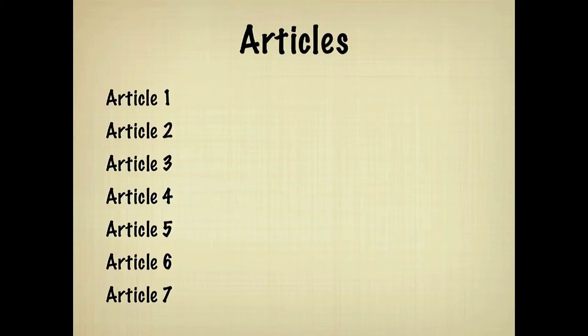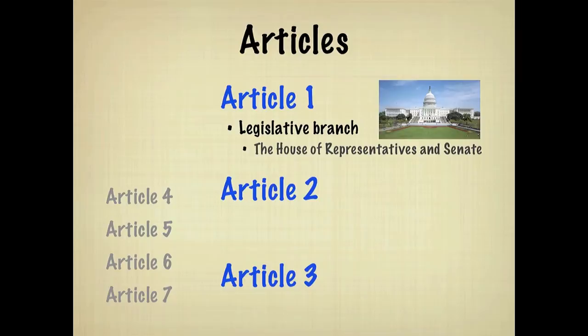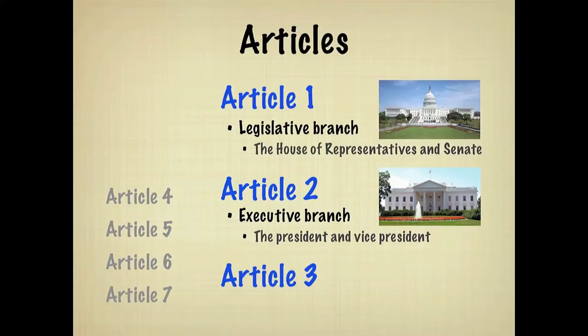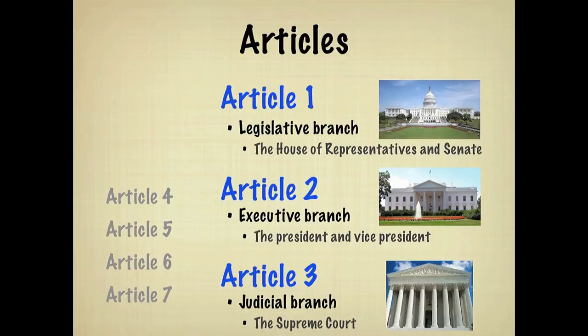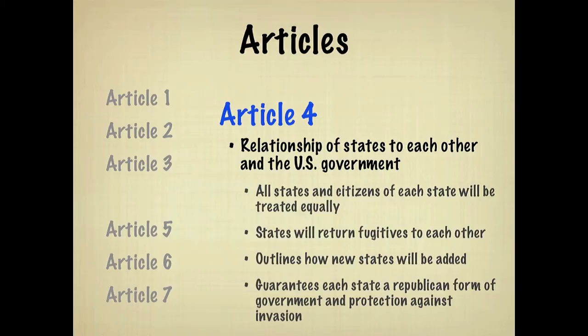The first three articles establish the three branches of government. The first article describes the legislative branch. The second outlines the executive branch. And the third establishes the judicial branch. Each article includes specific information, such as qualifications to hold office, terms of office, duties, and powers. The fourth article sets guidelines for how the states will relate to each other and to the U.S. government.